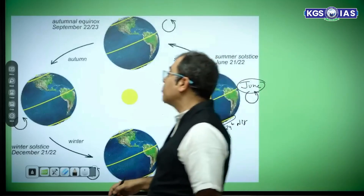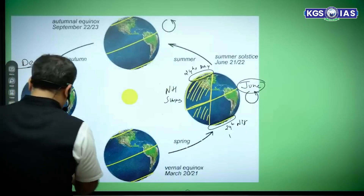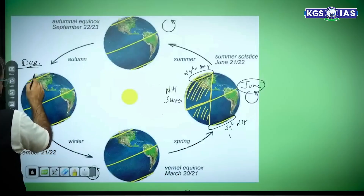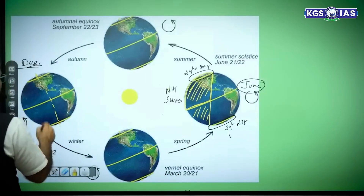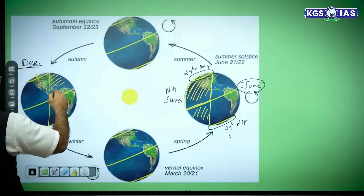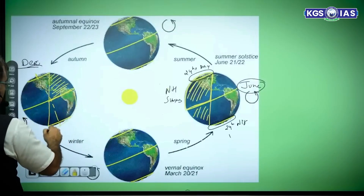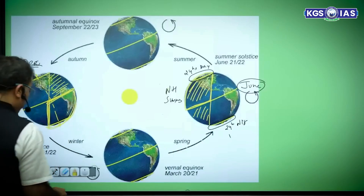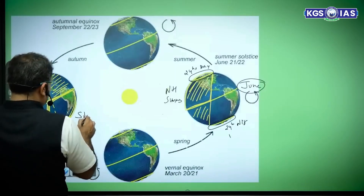This situation is for the month of June. But when we are in the month of December, the situation changes. This is our axis, but the Sun is now illuminating this other part. The northern hemisphere has only a small illuminated area, while the southern hemisphere has more area under the Sun.